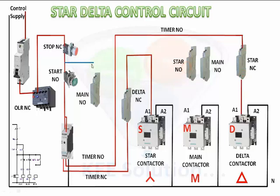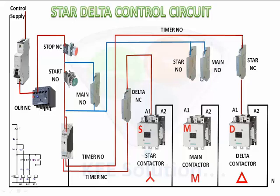In parallel with the start button, we take the main contactor auxiliary contact NO, which connects to star NO and main NO, and terminates at the A1 coil of the main contactor. Now we will see this through animation.